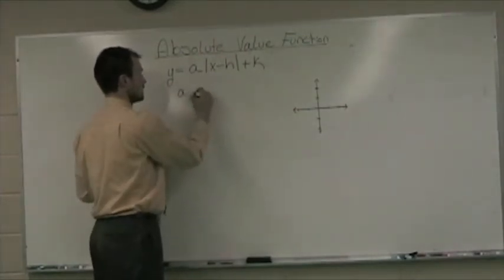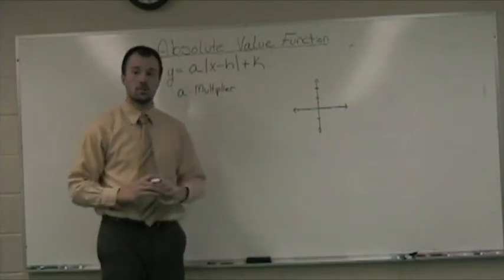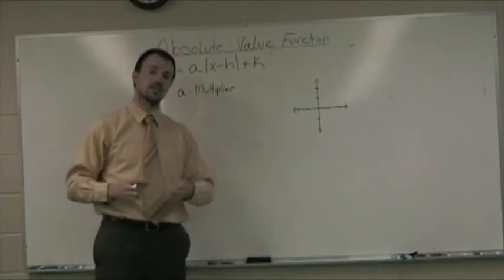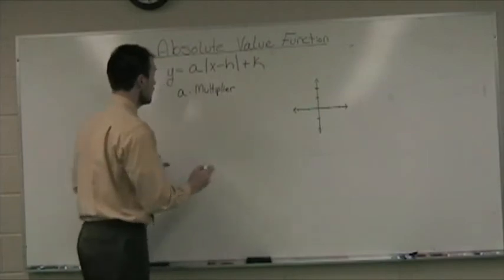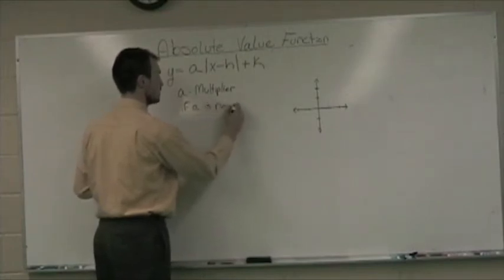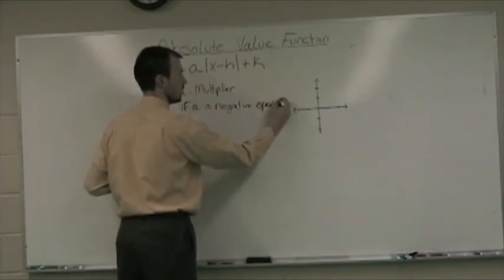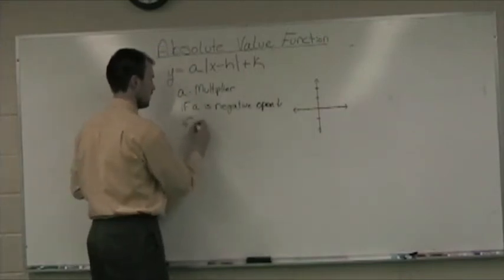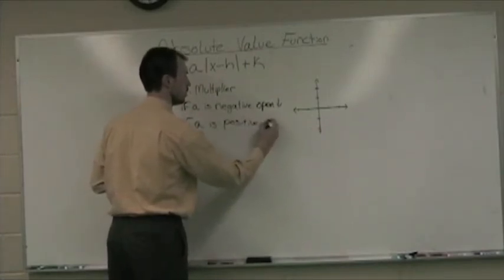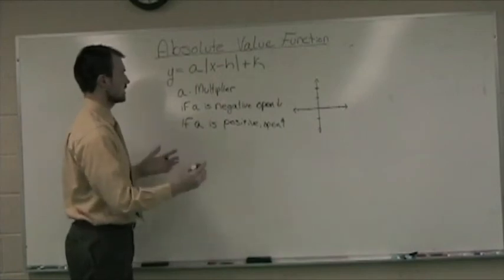But A is the multiplier. And a multiplier is going to either stretch out our graph or shrink it down, make it wider or skinnier than the original graph. Some big things about A. If A is negative, then this graph will open down. But if A is positive, it will open up.